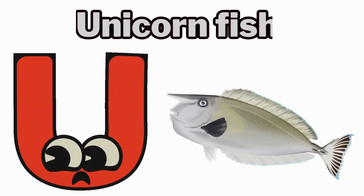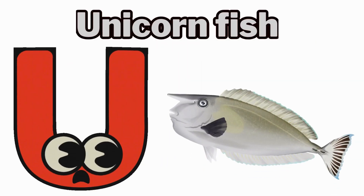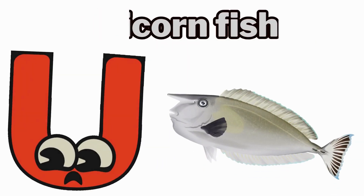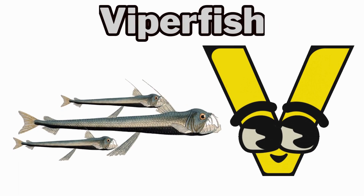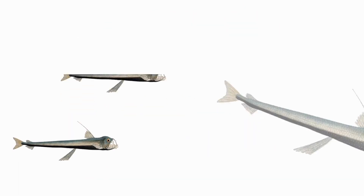U is for unicorn fish, uh, uh, unicorn fish. V is for viperfish, vuh, vuh, viperfish.